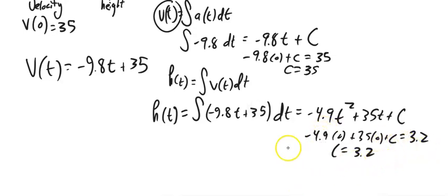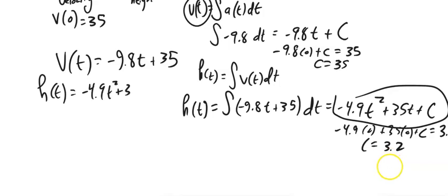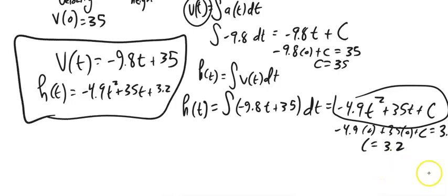I'm sorry, 3.2. So c is 3.2. So that gives me an equation for that height, 35t plus 3.2. And then I've come up with those.